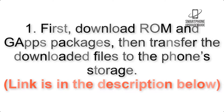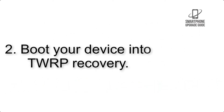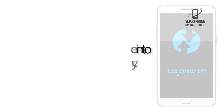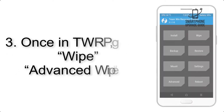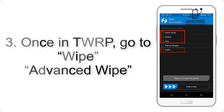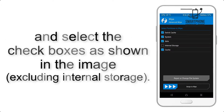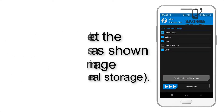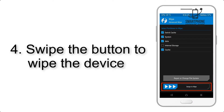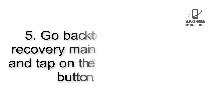Link is in the description below. Step 2: boot your device into TWRP recovery. Once in TWRP, click on Wipe, then Advanced Wipe, and select the checkboxes as shown in the image, excluding internal storage. Step 4: swipe the button to wipe the device.